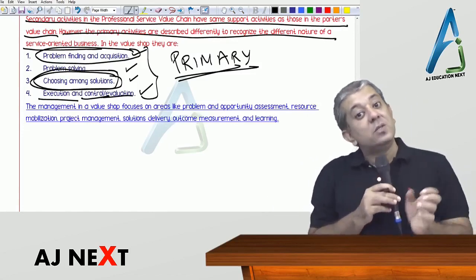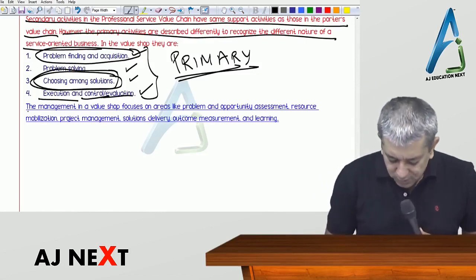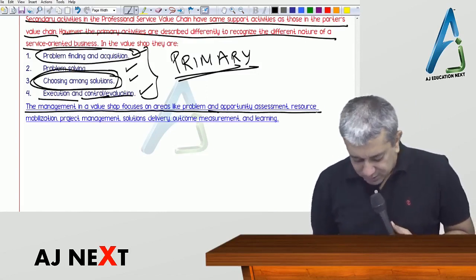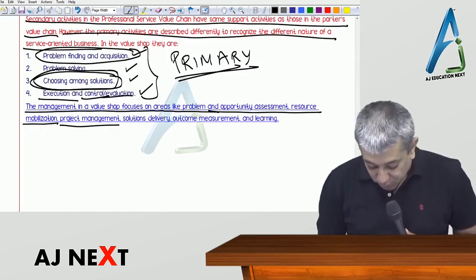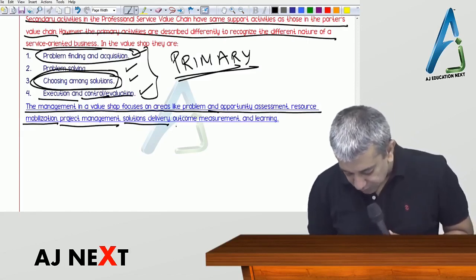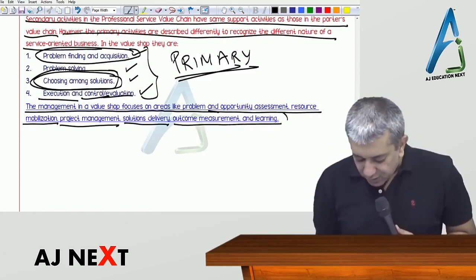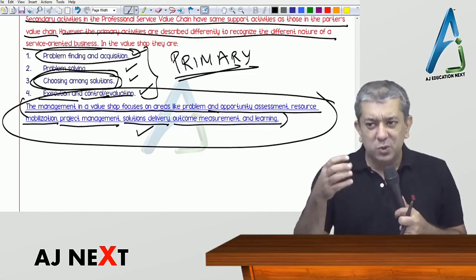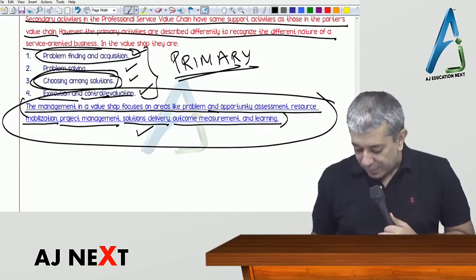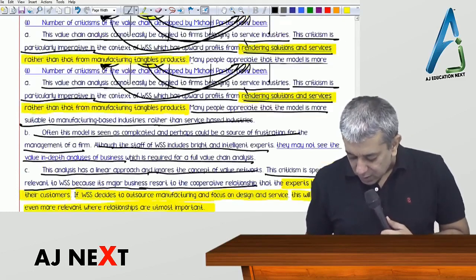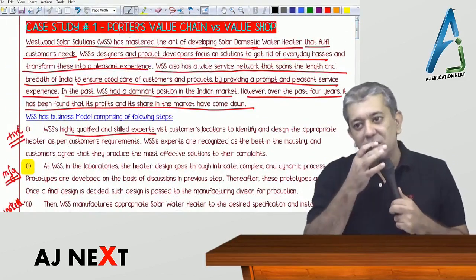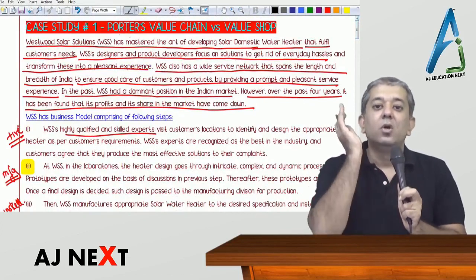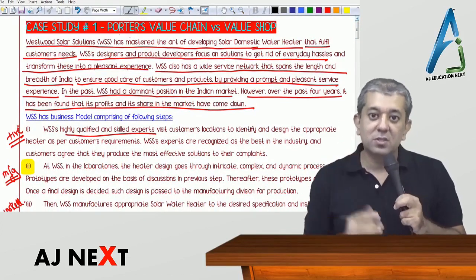For companies that are basically solution providers, value shop is the appropriate system. The management in a value shop focuses on areas like problem solving and opportunity assessment, resource mobilization, project management, solution delivery, outcome measurement, and learning. For companies mainly dealing in all these things, value shop is far better than value chain. This was case study number one — your next case study will be completely on value chain analysis. But this one was an introduction and demarcation of which companies value chain applies to and which companies value shop applies to.